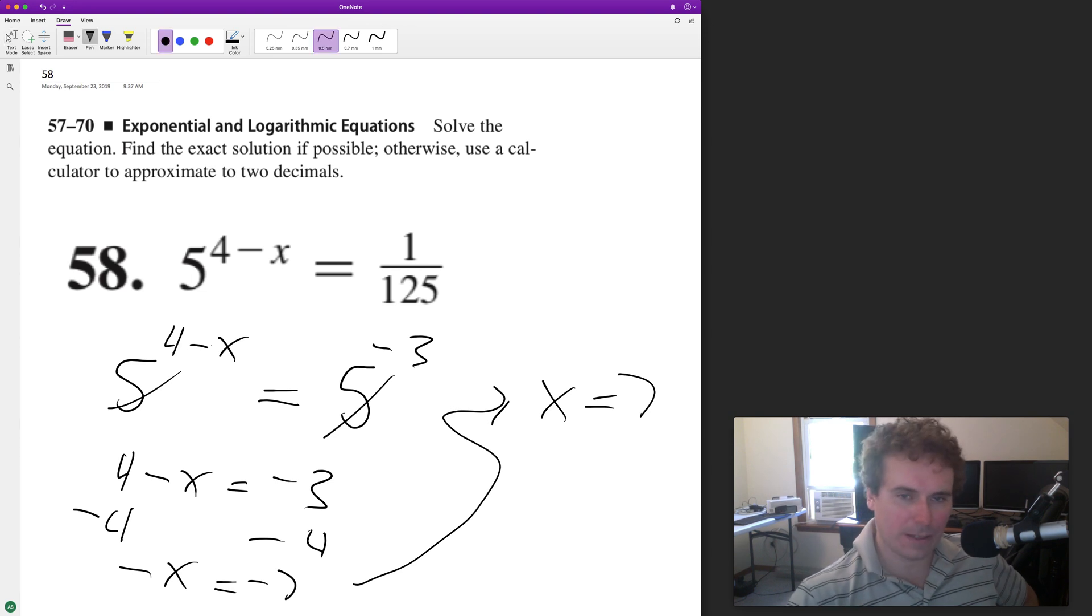So what we can do now is just test it. So 5 raised to the 4 minus 7. Same thing as 5 raised to the negative 3, which can be rewritten as 1 over 5 cubed, which is 1 over 125.